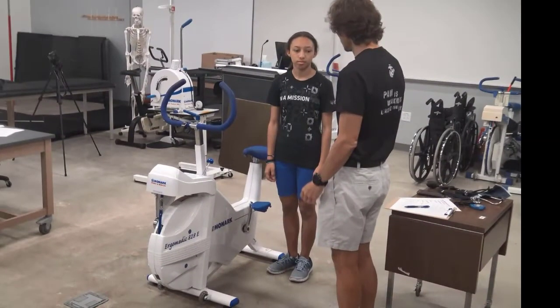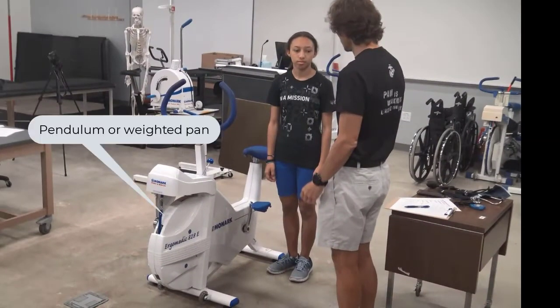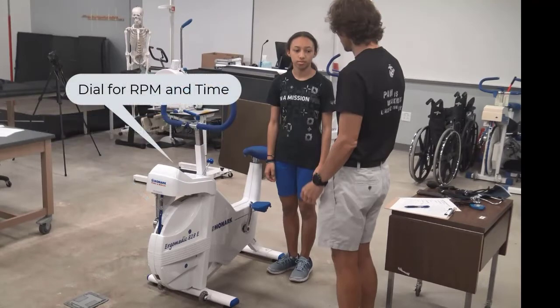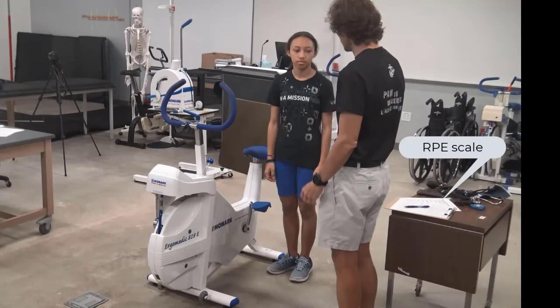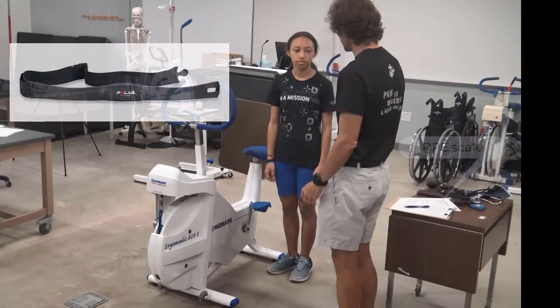To conduct this test, we need a stationary bike that can increase resistance in half kilogram increments up to three and a half kilograms, a metronome if the RPM dial is not available, blood pressure cuff and stethoscope, and a rating of perceived exertion scale, typically the Borg 6-20 scale. Chest strap heart rate monitors are often used, but we will practice taking heart rates manually.